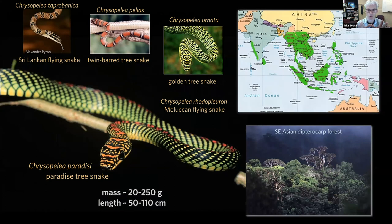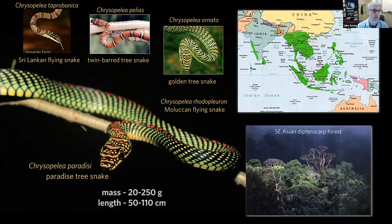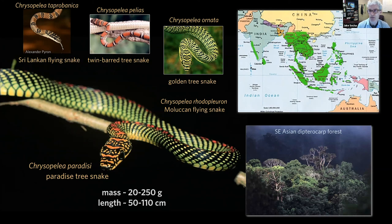Here's an overview of the flying snakes. There are five species. Here's one, here's another, here's another. The main one I work on is the paradise tree snake. There's one I'd really like to work on but have limited photos of. I've worked on three of these species but not the one from Sri Lanka or the Malukan flying snake. They live in trees that can get quite tall, and they live generally in South and Southeast Asia — from southern China down through Malaysia, Indonesia, and the Philippines, and also in India and Sri Lanka.